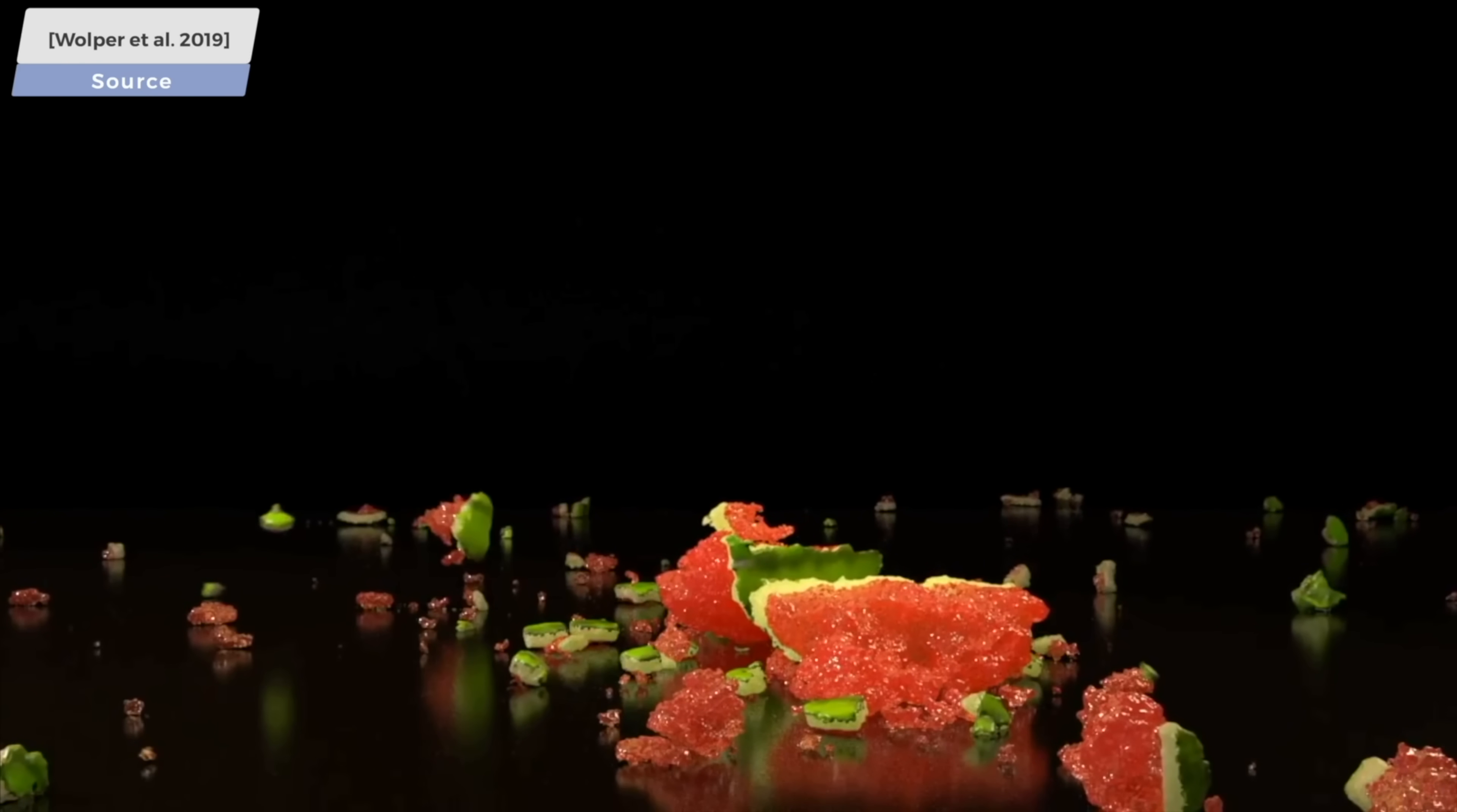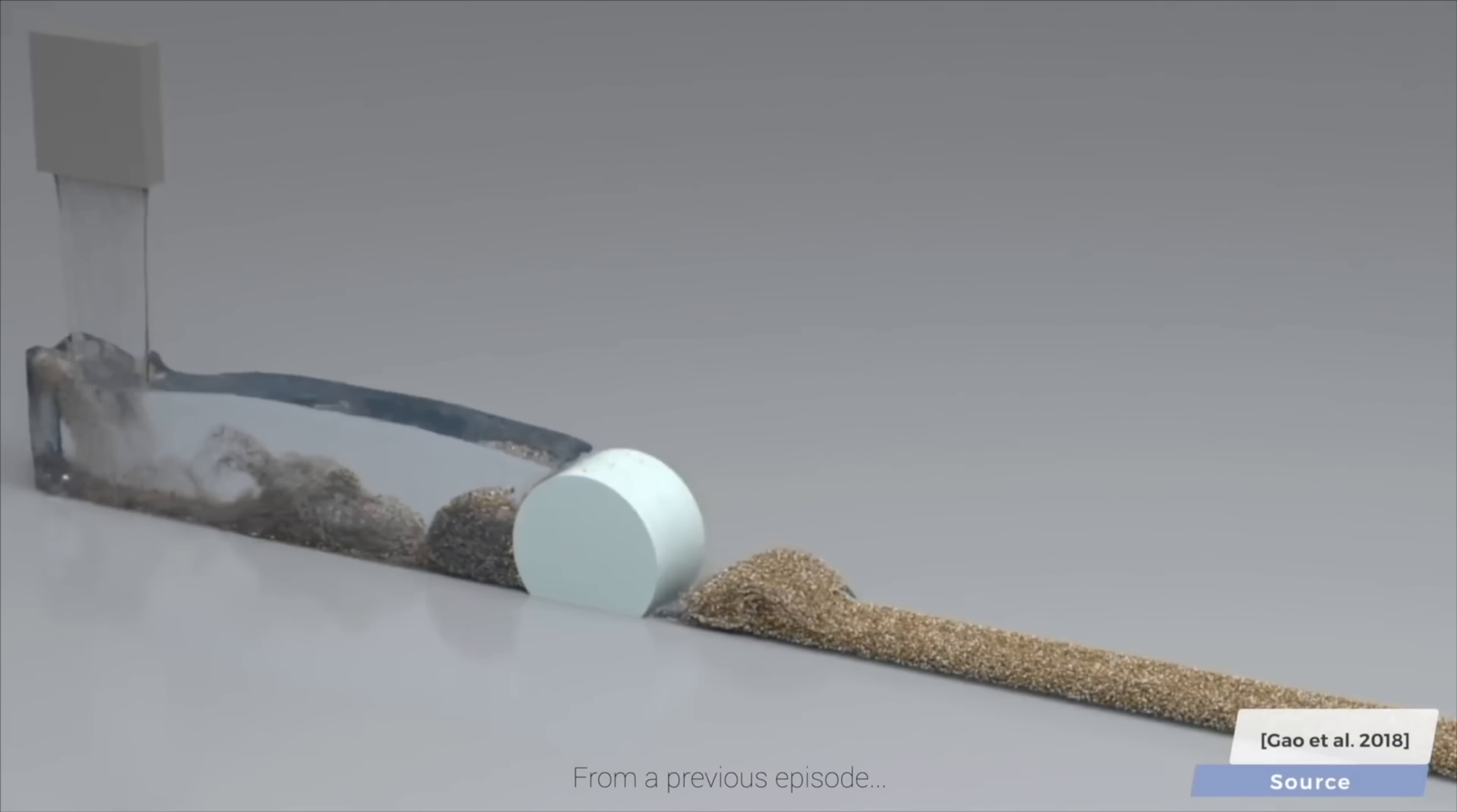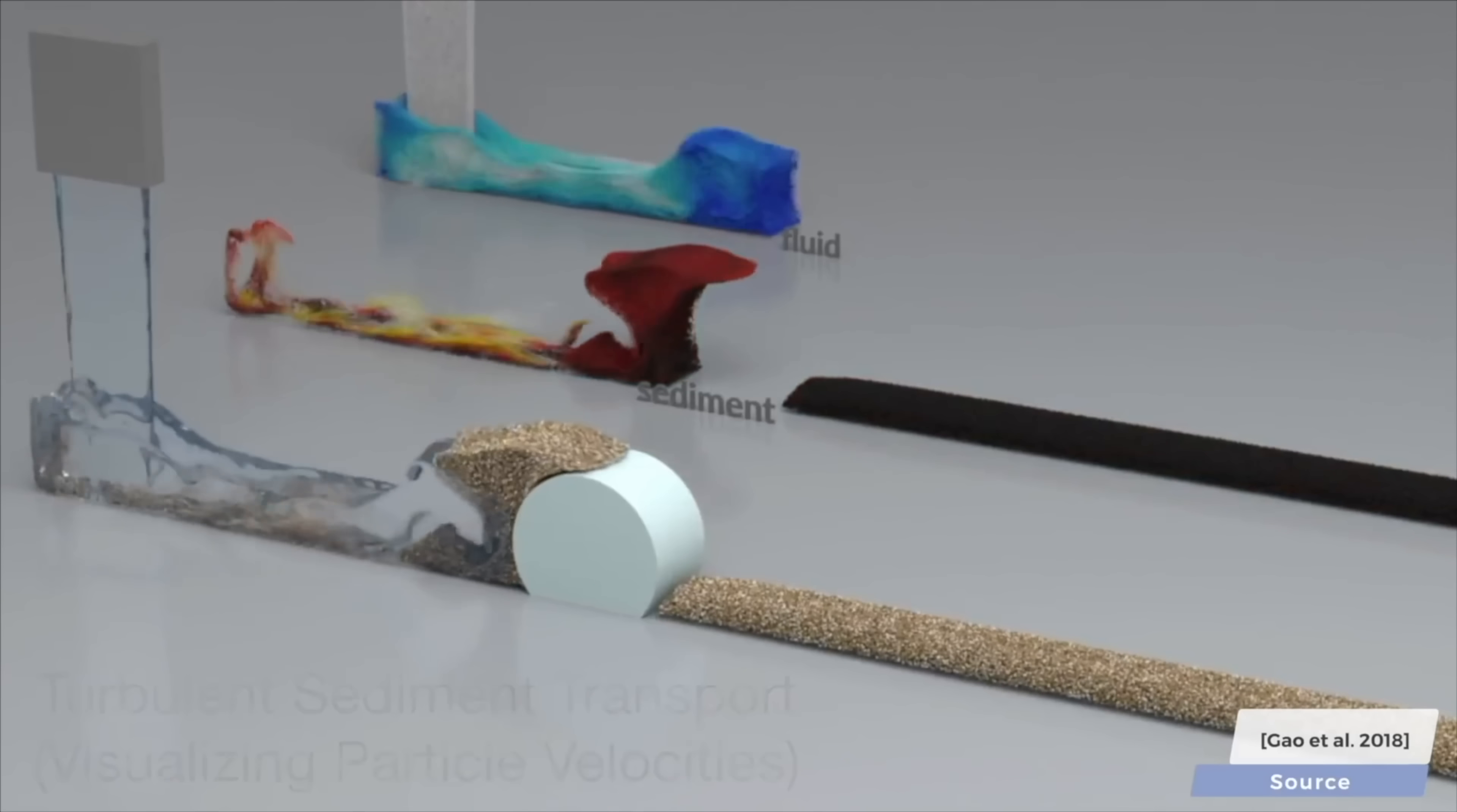Beyond that, when using this material point method, coupling problems frequently arise. This means that the sand is allowed to have an effect on the fluid, but at the same time, as the fluid sloshes around, it also moves the sand particles within. This is what we refer to as two-way coupling.